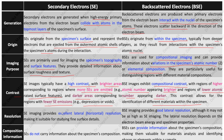Secondary electron imaging provides excellent lateral resolution, making it suitable for studying fine surface details. Backscattered electron imaging provides good lateral resolution, though not as high as secondary electron imaging; the lateral resolution depends on electron beam energy and specimen properties. Secondary electrons do not carry compositional information, whereas backscattered electrons can provide information about the specimen's composition, making them valuable for material analysis and identifying phases or elements within a sample.